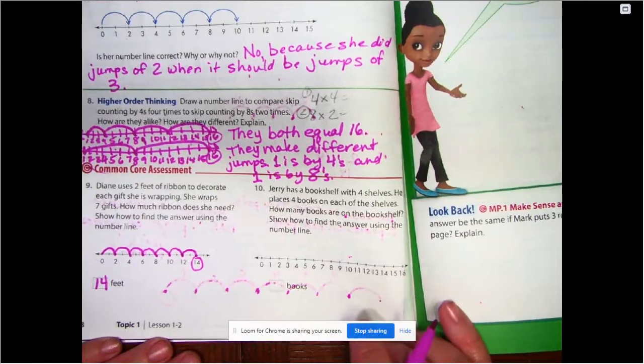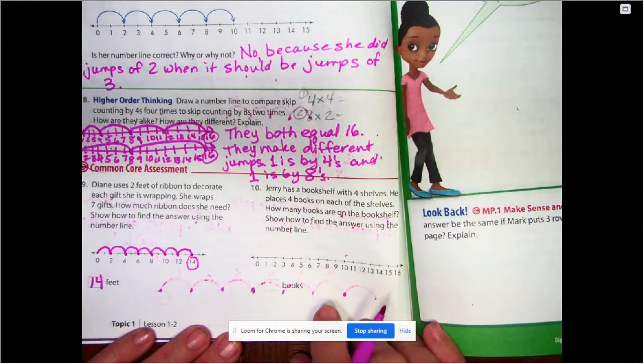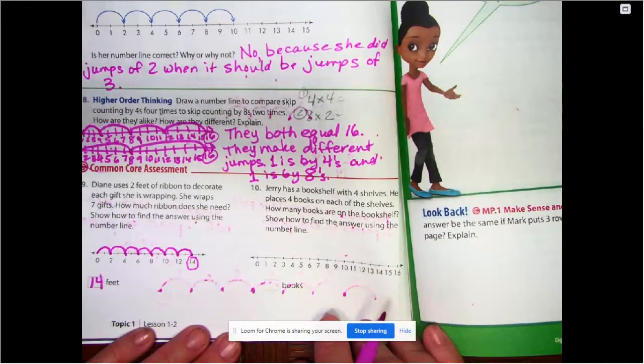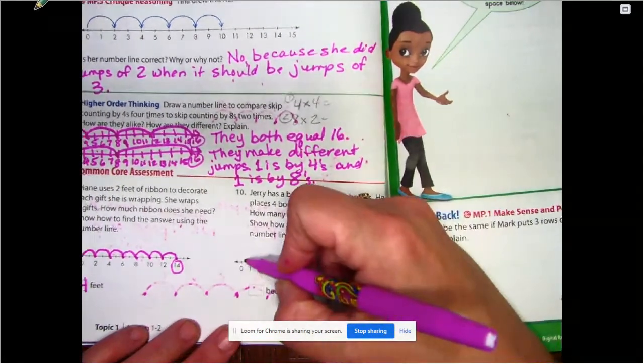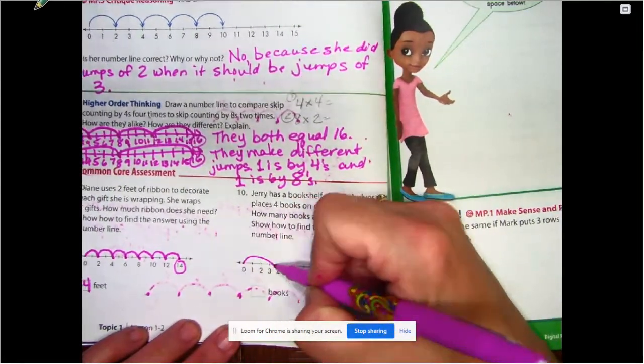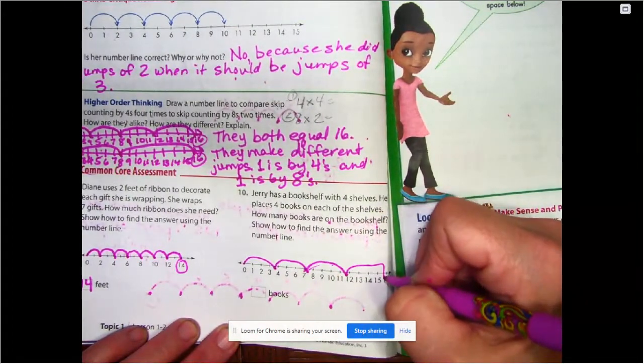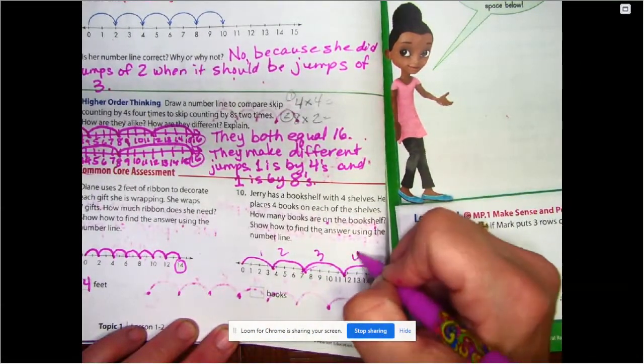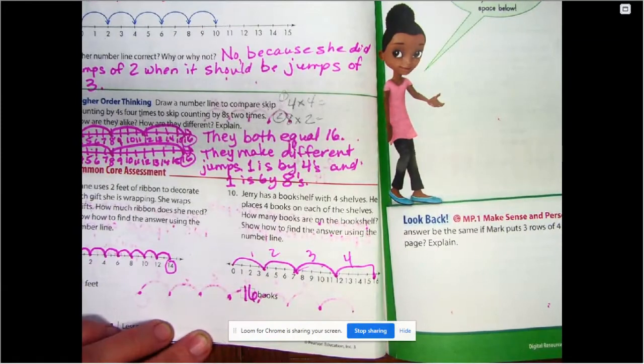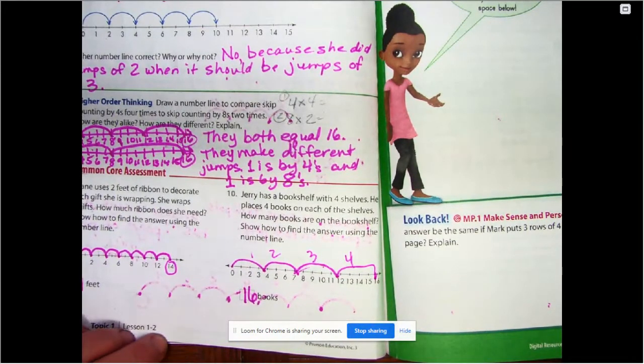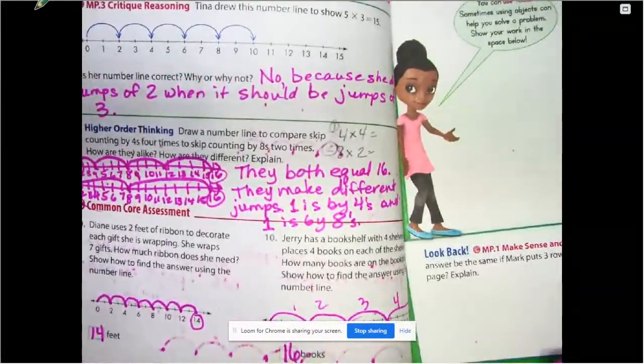Number ten. Jerry has a bookshelf with four shelves. He places four books on each of the shelves. How many books are on the bookshelf? Show how to find the answer using the number line. So we're going to do jumps of four. Four, eight, twelve, sixteen. That's one, two, three, four jumps. So sixteen books. Sloppy, I know. I have my pen, too. All right. So make sure you have all your corrections in here. Go back. Rewind if you need to.